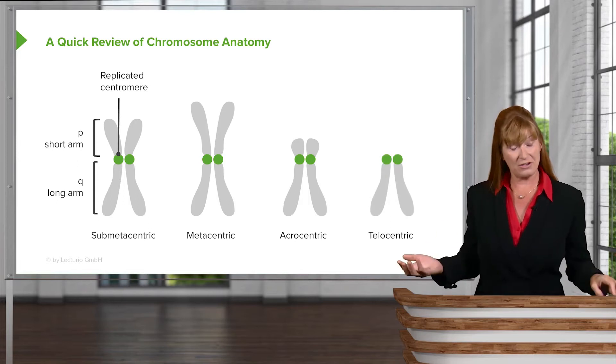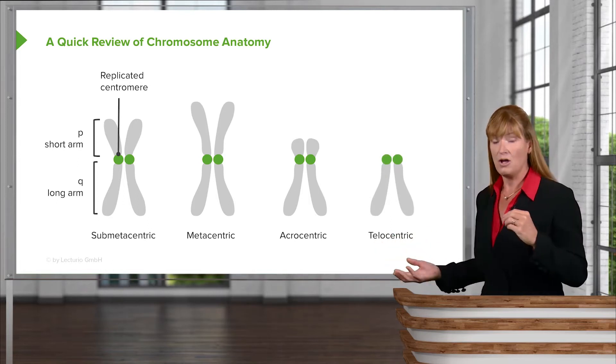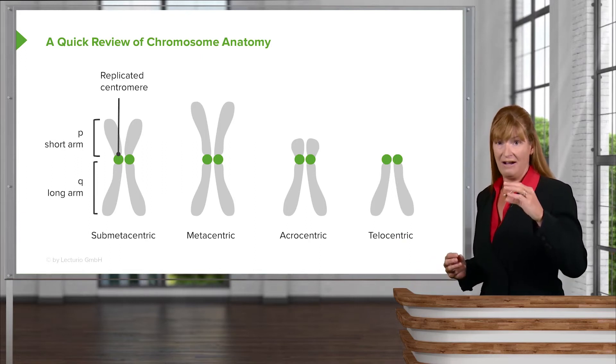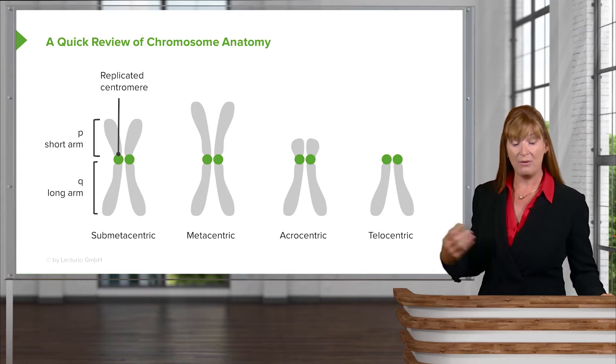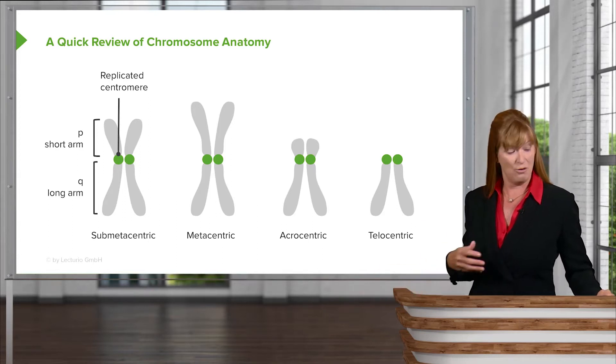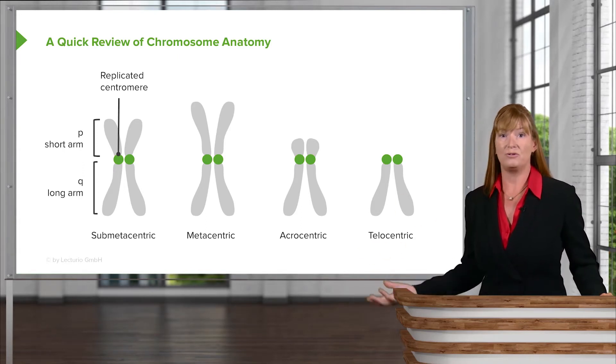The centromeres are slightly further away from the center or further away from the ground. And then telocentric, well we know the telomeres are right at the end. So telocentric chromosomes have the centromeres right in the telomeric region. So now that we have an orientation to how we locate things on chromosomes, those will become useful as we move through the chromosomal disorders lectures.